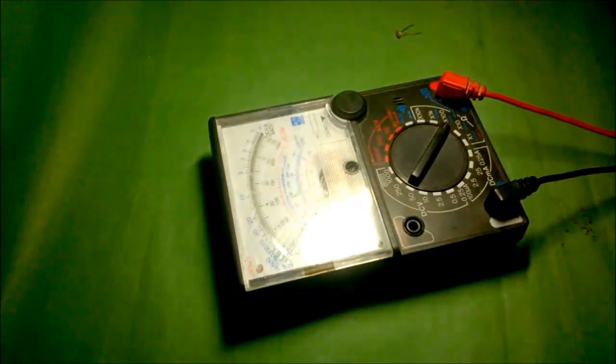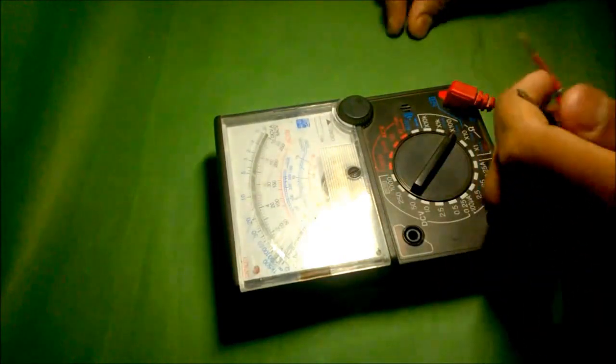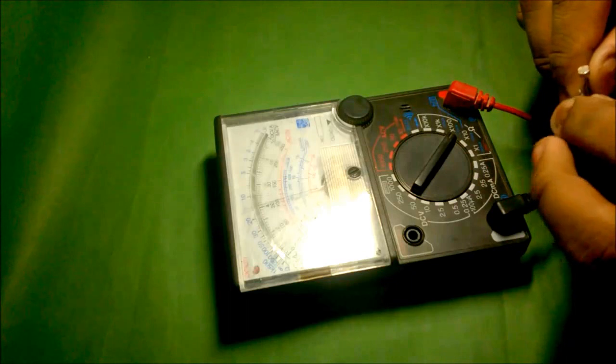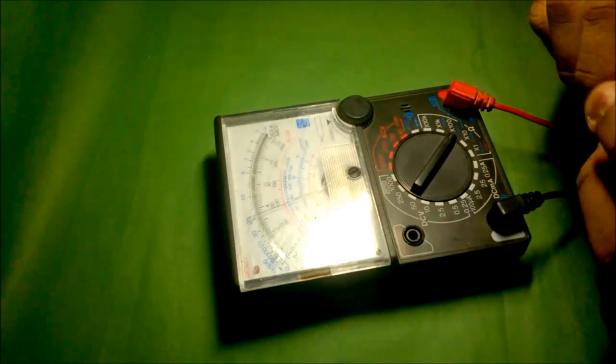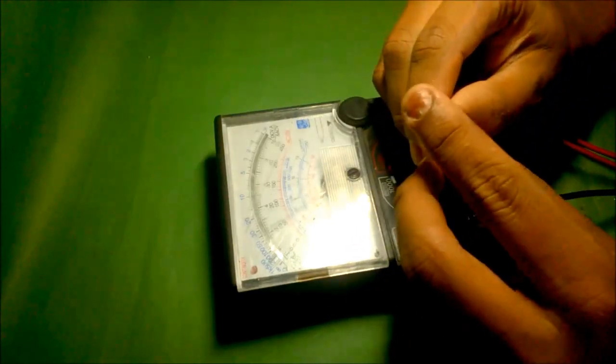Let's test LDR using a multimeter. The resistance is low when the light is falling on it, but when I am giving shadow on the surface of the LDR, the resistance is going too high instead.